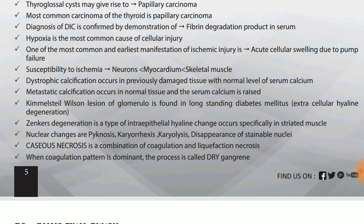Diagnosis of DIC is confirmed by demonstration of fibrin degradation products in serum. Hypoxia is the most common cause of cellular injury. One of the most common and earliest manifestations of ischemic injury is acute cellular swelling due to pump failure. Susceptibility to ischemia: first skeletal muscle, then myocardium, then neurons — so neurons are least susceptible.